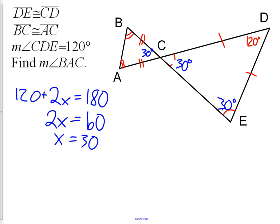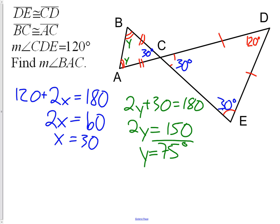Now I have another isosceles triangle. I'll call these two angles Y. I know that 2Y plus 30 is also going to equal 180 because of the triangle sum theorem. 2Y is going to be equal to 150 and Y equals 75.